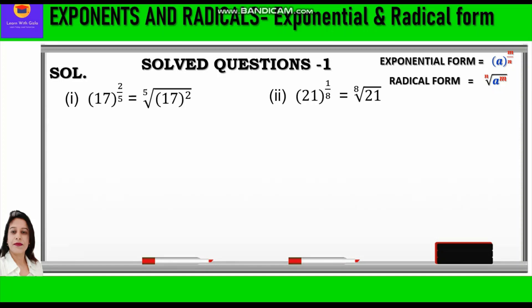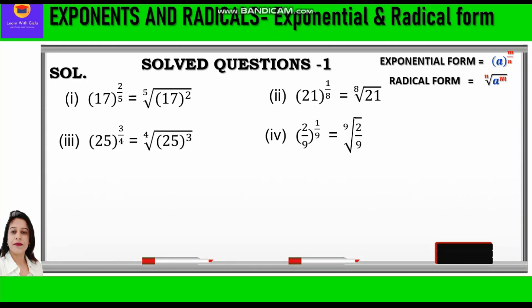Second question: 21 raised to power 1 by 8. Here 8 becomes the root and 1 is the power, so we write the 8th root of 21. Third part: 25 raised to power 3 by 4. Here 3 becomes the power and 4 becomes the root, so we write the 4th root of 25 cubed. Fourth question: (2 by 9) raised to power 1 by 9. Here 9 becomes the root and 1 becomes the power, so we write the 9th root of 2 by 9.